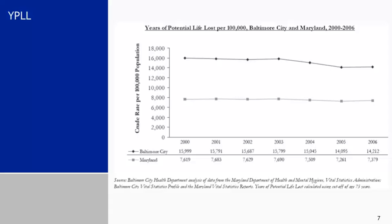Here are two quick examples of YPLLs. The first shows years of potential life lost per 100,000 in Baltimore City and the state of Maryland. Baltimore City is represented by the dark line with closed circles on top, and the lower line represents Maryland overall. The data presented here are YPLLs per 100,000 population — a rate — and the YPLL rate for Baltimore is much higher than for the state of Maryland.